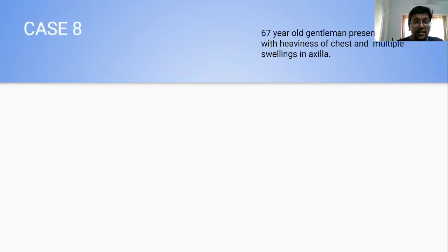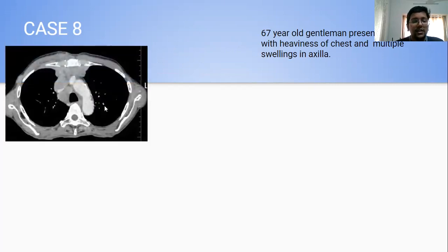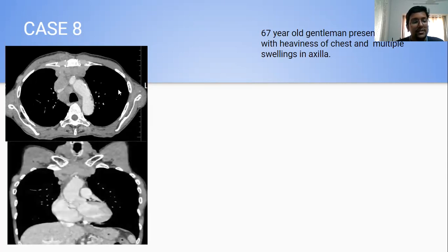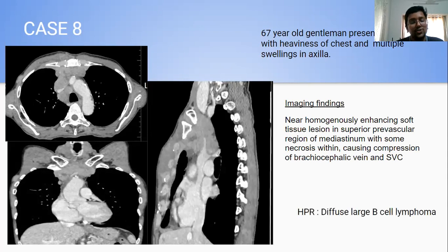My eighth case was a 67-year-old gentleman who presented with heaviness of chest and multiple swellings in the axilla. CT revealed near-homogeneously enhancing lesions involving the mediastinum with mediastinal lymph nodes, compressing the SVC as well as the brachiocephalic vein with no evidence of infiltration. There was no calcification, no necrosis, and no bony erosions at all. This turned out to be diffuse large B-cell lymphoma.